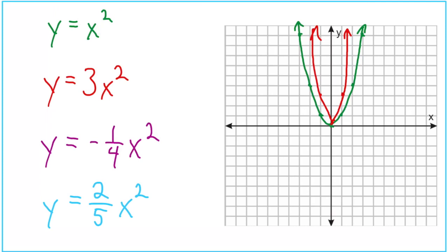How about y equals negative one-fourth x squared? I would have zero, zero. You might want to think about where the first whole-number answer is. That would be one-fourth of two squared: two squared is four, and one-fourth of four is one. So if I go over two, I'd be going down one. I'd skip three because one-fourth of nine is a fraction. But if I go over four, that's 16, and one-fourth of 16 is four. So left and right four, down four. Connecting with a smooth line gives us our parabola.